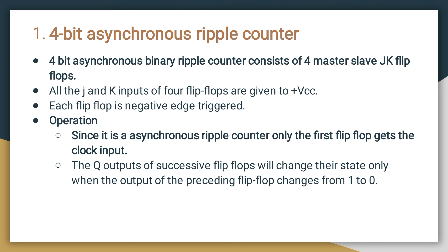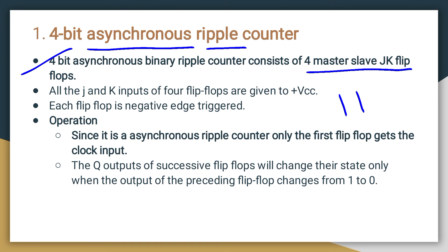The first topic is the four-bit asynchronous ripple counter. The name signifies that it is asynchronous — there is no common clock — but according to ripple operation, we apply the clock only to the first flip-flop. It consists of four master-slave JK flip-flops. The condition for the JK flip-flop in master-slave mode with both inputs J and K set to 1 causes the output to toggle.